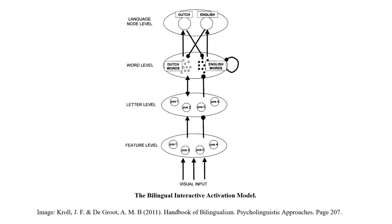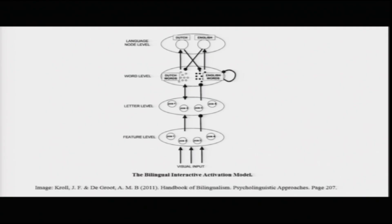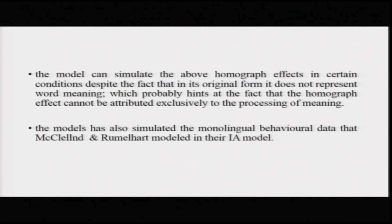The interaction between the word level and feature level is excitatory from both sides. However, there is some inhibition travelling from the letter level to the word level, because when particular letters are recognized they will inhibit words they are not a part of — very much like TRACE. This model can simulate interlingual homograph effects such as chef, room, or coin, in certain conditions, despite the fact that in its original form it does not represent word meaning. It handles those effects through letter and word level activations, which hints that the homograph effect cannot be attributed exclusively to processing of meaning, but also to processing of form or spelling.